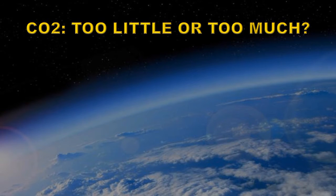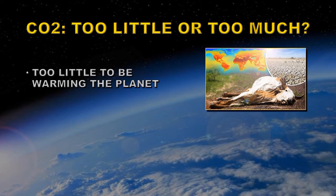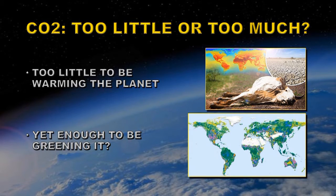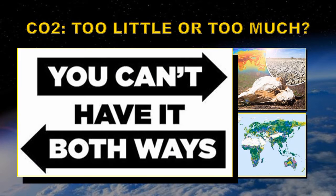Is there too much carbon dioxide in the atmosphere or too little? Some say there's too little to be warming the planet and causing all these droughts and high temperatures all around the planet, while others — often the same people — are claiming that there's so much new carbon dioxide that it's greening the planet. As far as I'm concerned, you can't have it both ways.